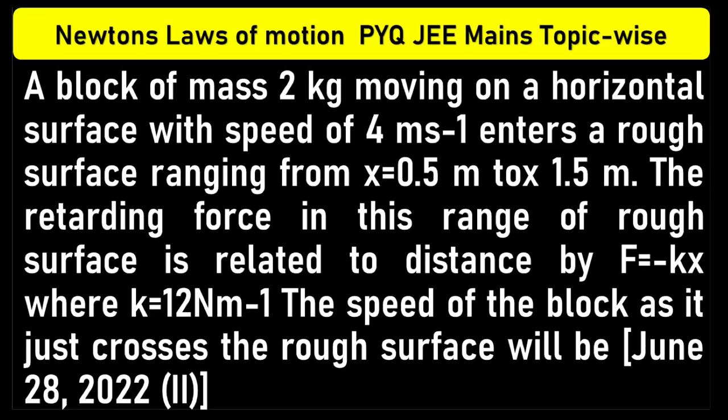A block of mass 2 kg moving on a horizontal surface with a speed of 4 m per second enters a rough surface ranging from x equal to 0.5 m to x equal to 1.5 m. The retarding force in this range of rough surface is related to distance by F equals minus kx, where k is equal to 12 N per m. The speed of the block as it just crosses the surface will be.